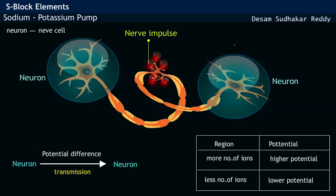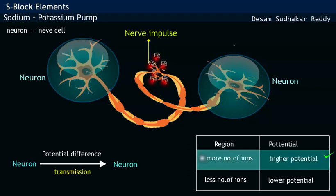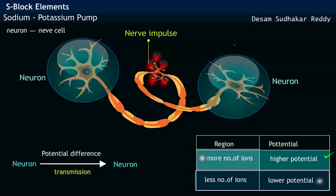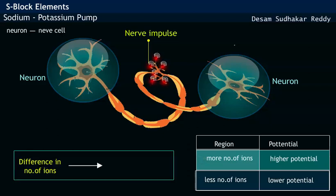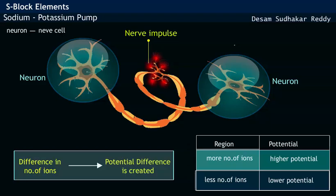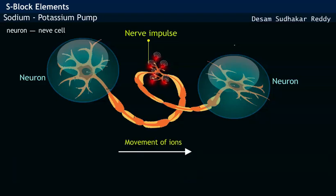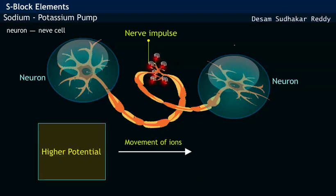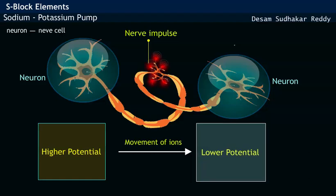A region with a greater number of ions is said to have higher potential, while the lower potential region has fewer ions. This difference in number of ions creates a potential difference, and the ions move from higher potential to lower potential.